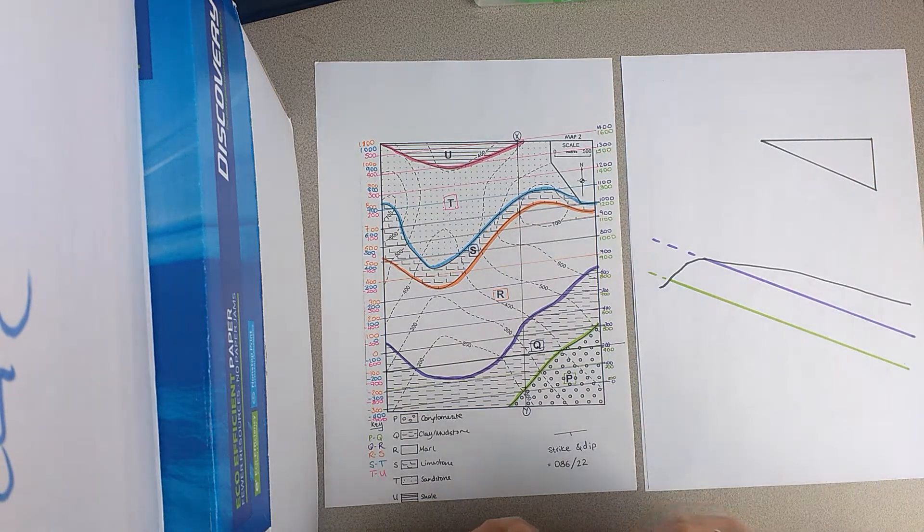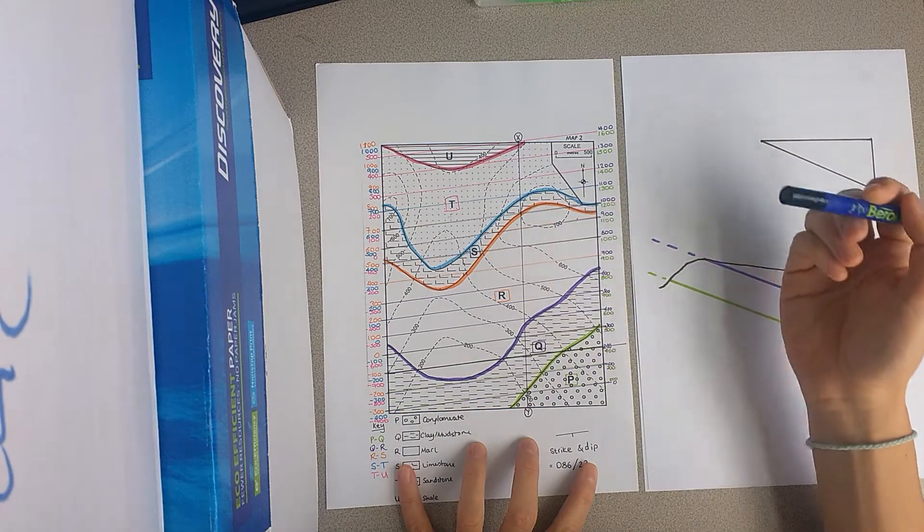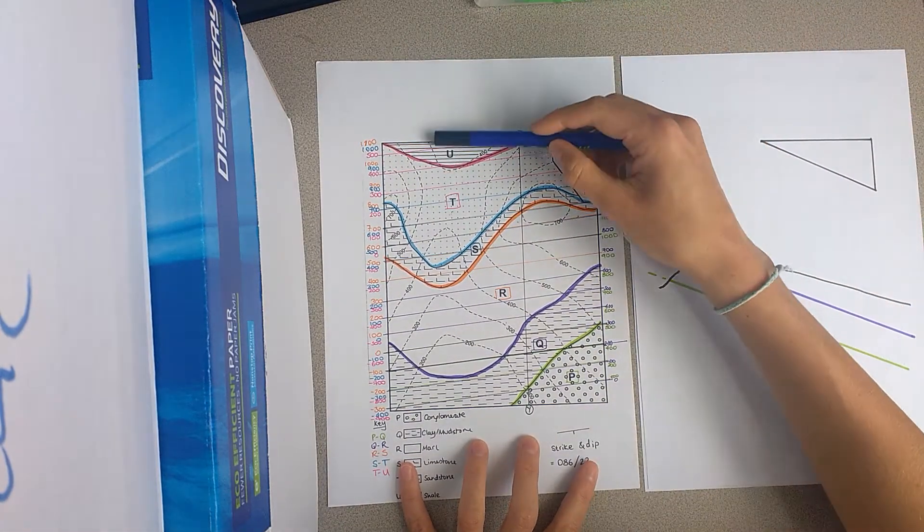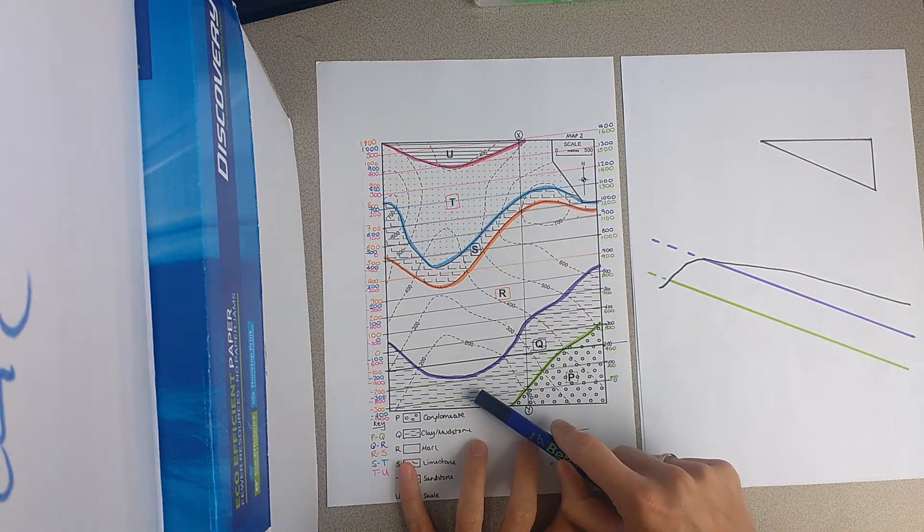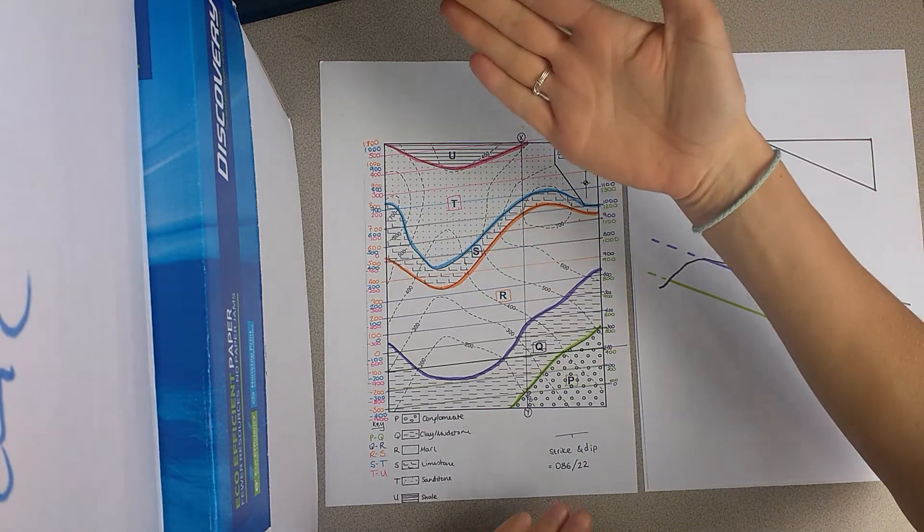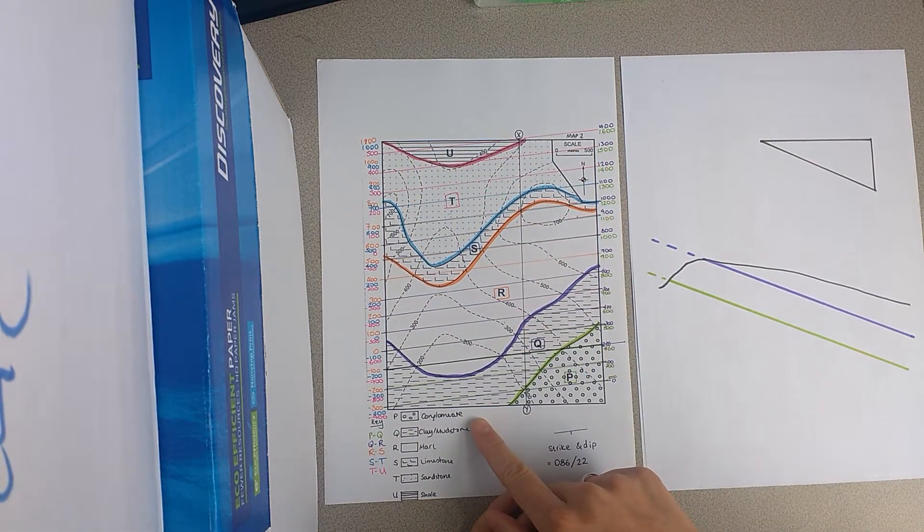Okay, so what we are looking at when we see this map, this is map 2, you might remember. We have the high ground up here, and then we have a valley going down to the low ground. And you can see from the rule of V's that all of these units are dipping down to the bottom, the south of the map.